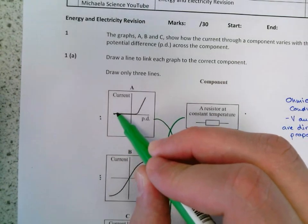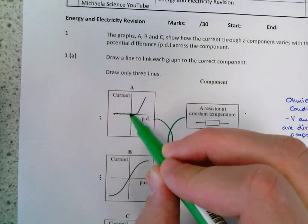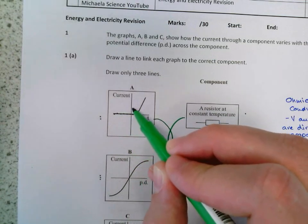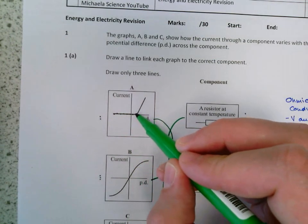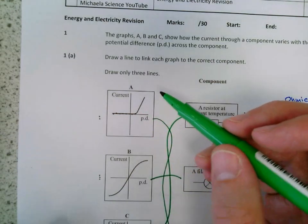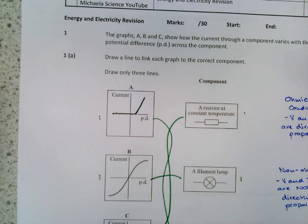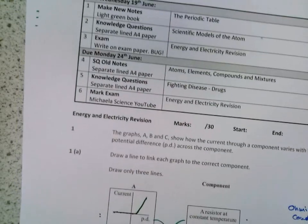We can see that on the graph. So, potential difference increases, and no current flows until it gets to this particular point here. At this potential difference, then the current can start to flow. So there you go. That's the first part of the first question.